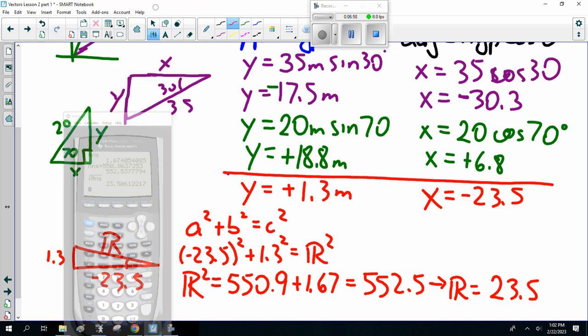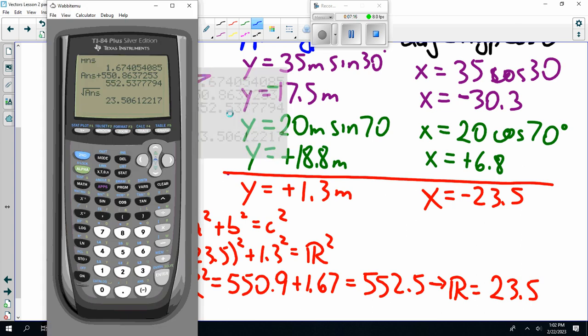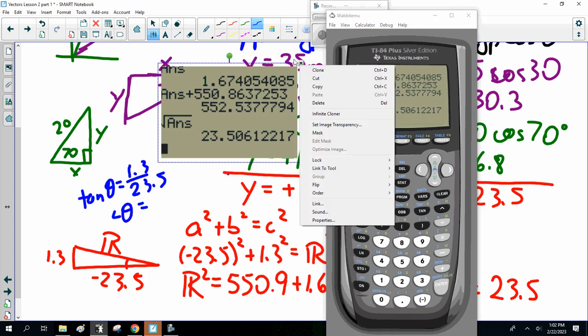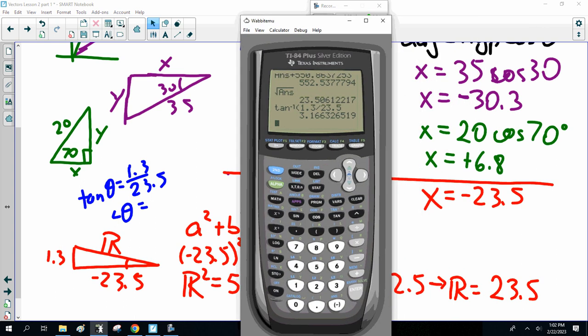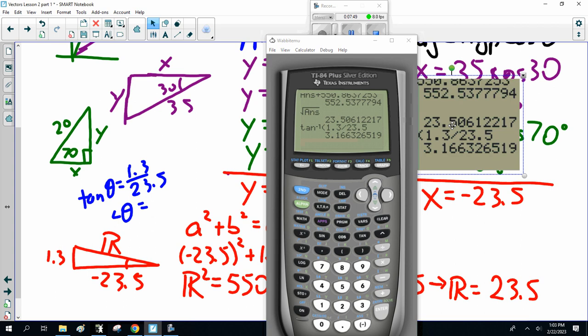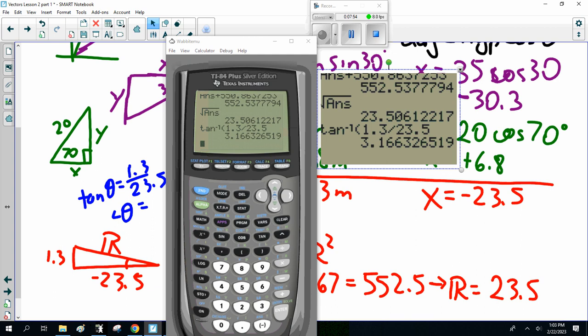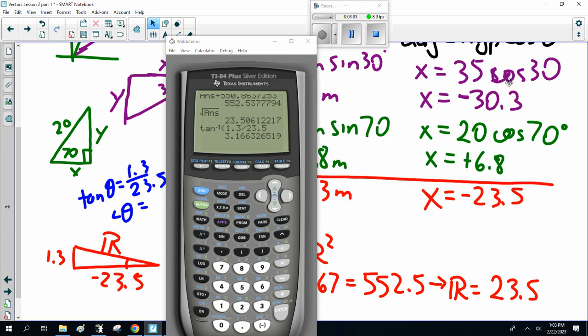I've got to figure out my angle. So, this is tan theta is opposite, 1.3 divided by 23.5. So, angle theta. Now, I don't worry about the negative part here with the angle. Inverse tan 1.3 divided by 23.5 equals 3.16 degrees. That's something new every day. So, 3.2 degrees.